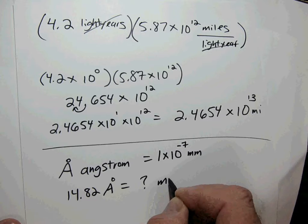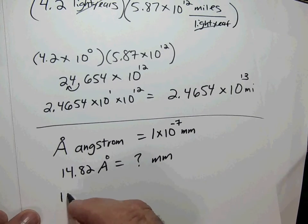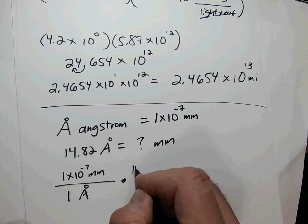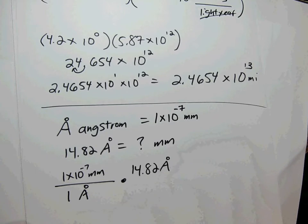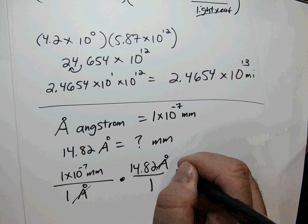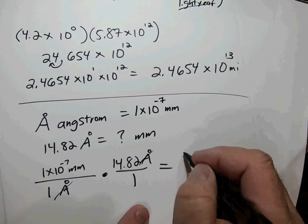The question asks: what is the length in millimeters of 14.2 angstroms? We have the conversion: 1 times 10 to the negative 7 millimeters per angstrom. Writing it as a unit ratio — 1 times 10 to the negative 7 millimeters over 1 angstrom — we multiply by 14.2 angstroms. Angstroms cancel, leaving only millimeters.